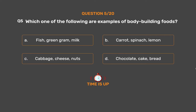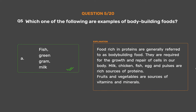The correct answer is Option A - Fish, green gram, milk. Food rich in proteins is generally referred to as bodybuilding food. They are required for the growth and repair of cells in our body. Milk, chicken, fish, egg, and pulses are rich sources of proteins. Fruits and vegetables are sources of vitamins and minerals.